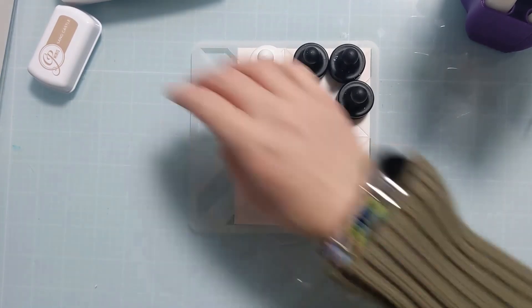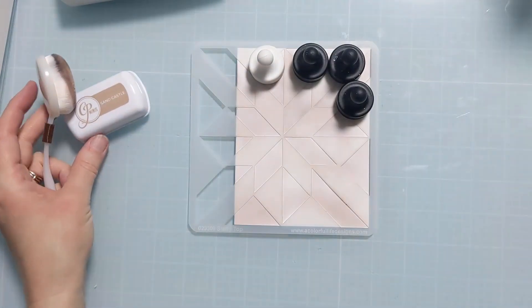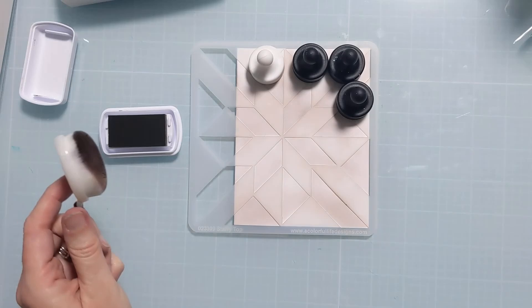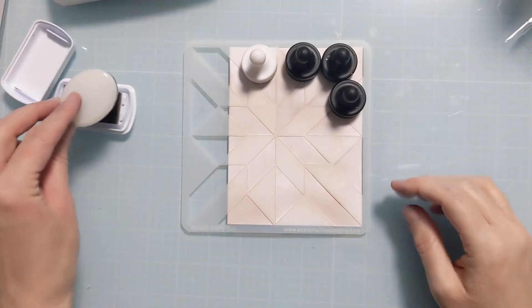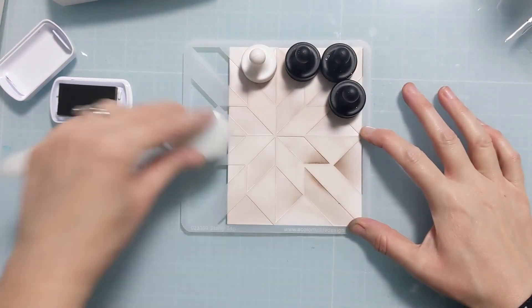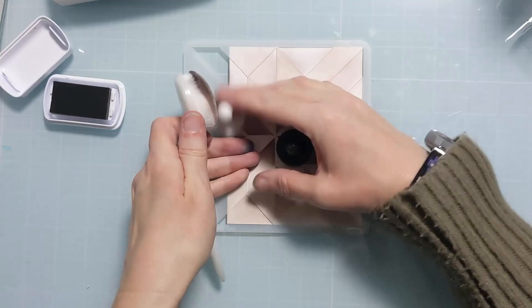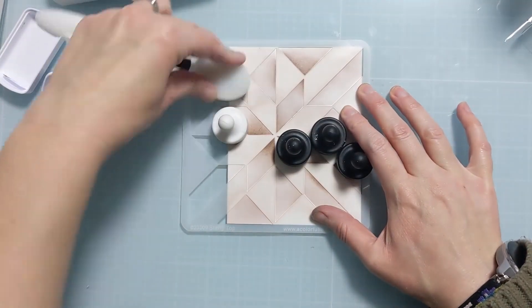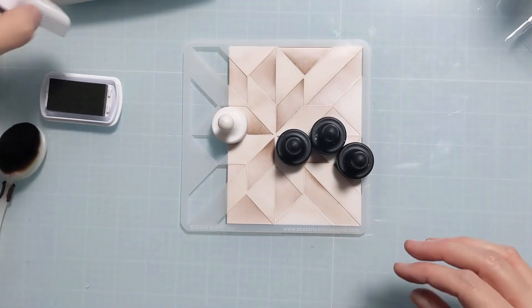Then I will come in with more saturated color here and my blending brush just to kind of give it some interest and dimension. So I'm going to press heavier handed in spots and skip over other areas just to give it that nice gradient in color.